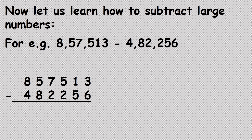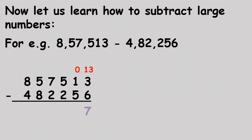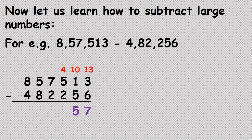The units place has three and six. We cannot subtract six from three, so we borrow — one becomes zero and three becomes thirteen. Thirteen minus six is seven. Now zero minus five: since we cannot subtract from zero, we borrow from the next digit five, which becomes four, and zero becomes ten. Ten minus five is five. Four minus two is two. Seven minus two is five.